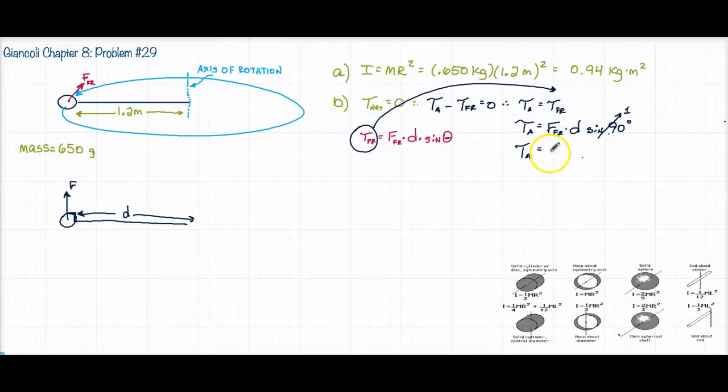And so now we can say that the required applied torque is going to be this very small frictional force, which is 0.020 Newtons times our distance of 1.2 meters. And when we multiply those two things together, we get 2.4 times 10 to the minus second, or 0.024 Newton meters, however you want to write the torque units. So there's our answer to part B, and our answer to part A is up here.